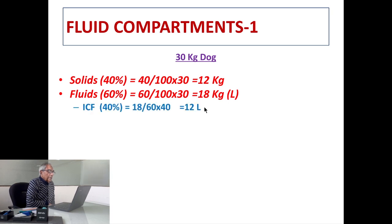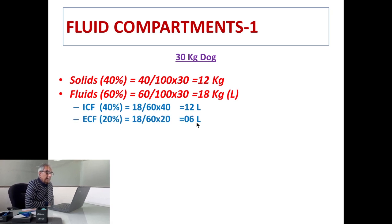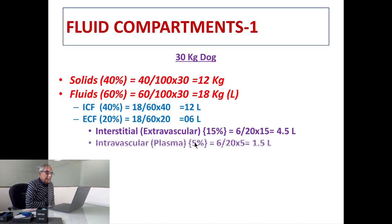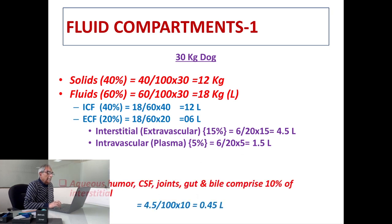Out of this, ICF is 40 percent and ECF is 20 percent, so ICF is 12 liters and ECF will be 6 liters. Interstitial water which is about 15 percent will come to about 4.5 liters and plasma which is the intravascular compartment, 5 percent, will be about 1.5 liters. This is how we can calculate it on mathematical basis.